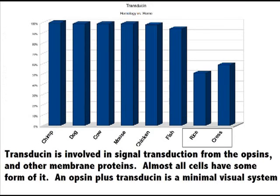Part 2: Primitive Visual Genes Are Highly Conserved. Here is Transducin, the protein that transmits the signal from the opsins. Note that it is very highly conserved between humans and fish, and that we also find a very similar protein sequence in a variety of plants.